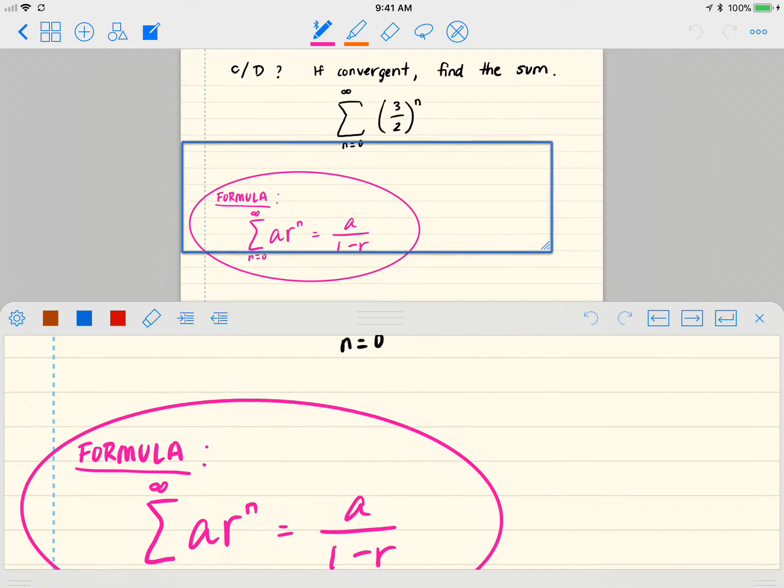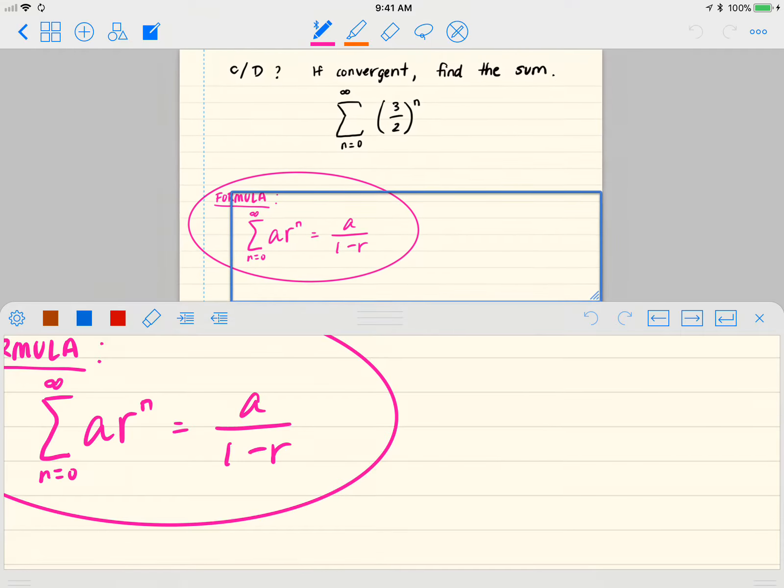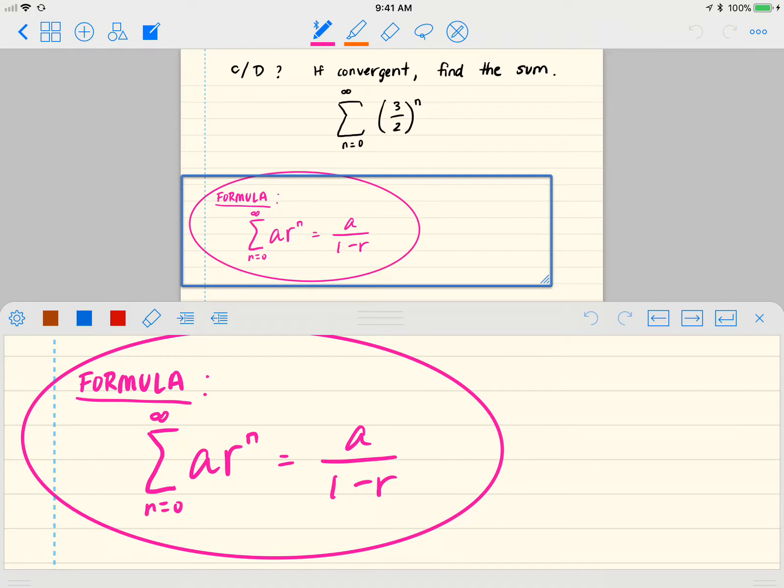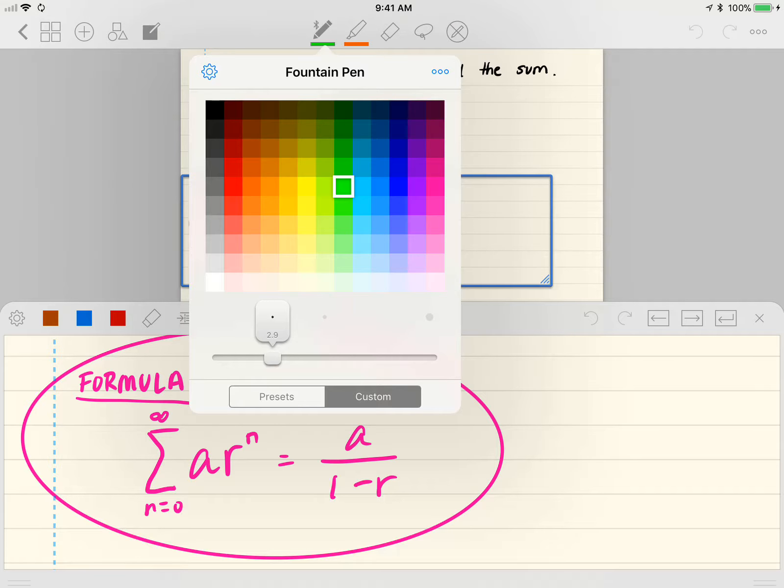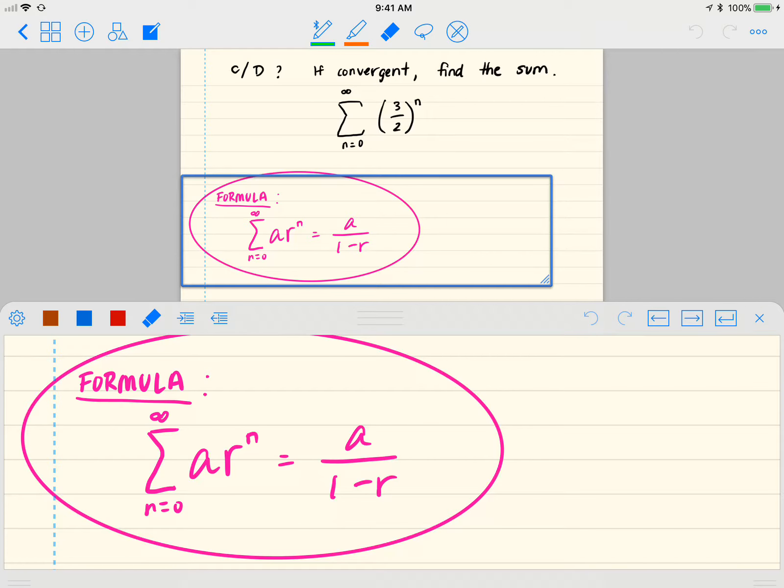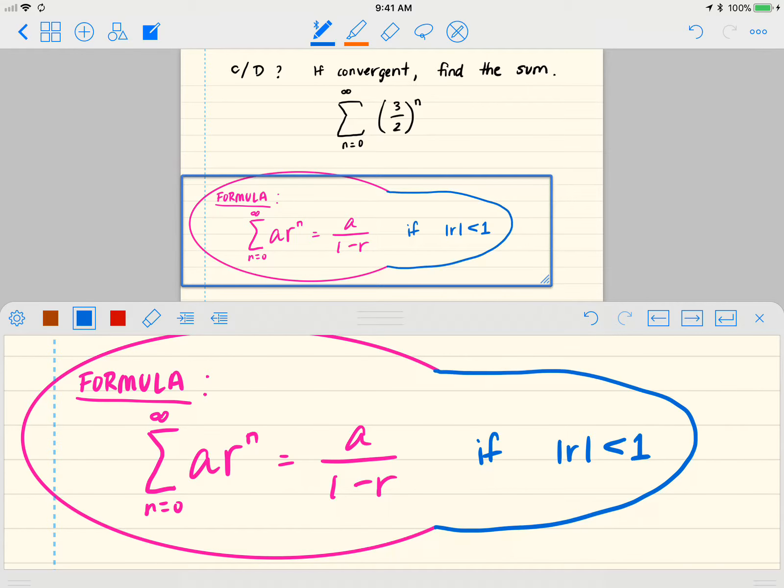Okay, so the first thing I want to do is remind you of the formula. Now notice that this formula is only true, so let me actually amend this. This is only true if the absolute value of r, which is your ratio, your constant, is less than one. So let's include that in there.